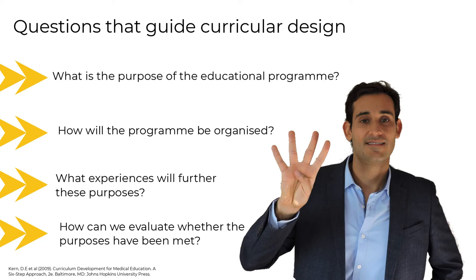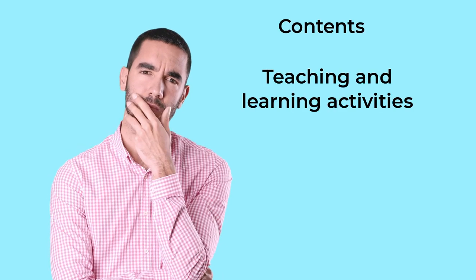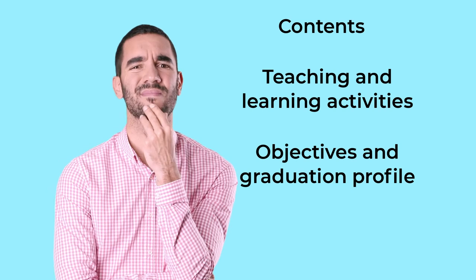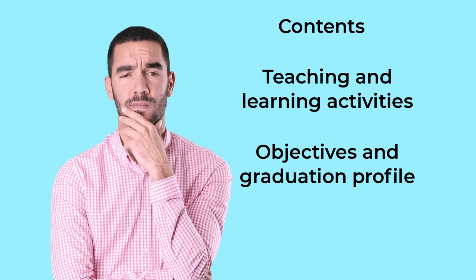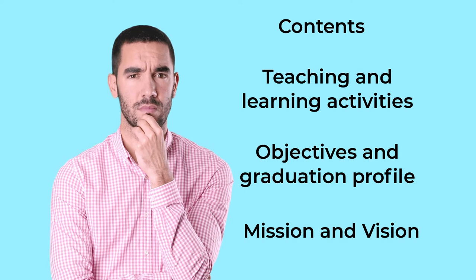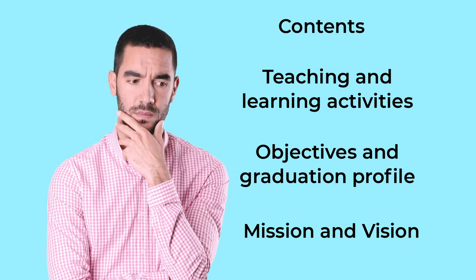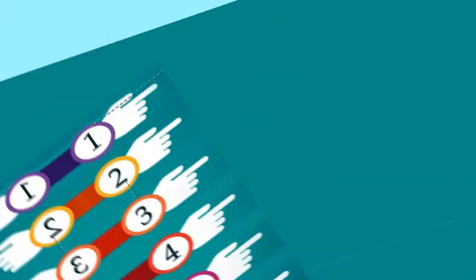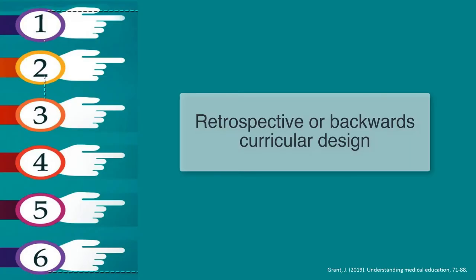Those in charge of curriculum design must then answer these questions. And as we have already seen in a previous video, there are a series of factors that influence curriculum design that must be considered. When starting to organize a curriculum from scratch, it is common to think that one should start by defining the contents, the teaching and learning activities, the objectives of the educational program, its graduation profile, and finally its mission and vision. However, the right way to do this is quite the opposite, in the reverse order. And this is what is called a retrospective curricular design or backward design.